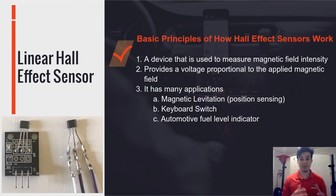Some of the basic principles of how a hall effect sensor works is that these type of sensors are used to measure magnetic field intensity, and the output of this device is the voltage that is proportional to the applied magnetic field. Today we're going to be looking at an application of this type of sensor with magnetic levitation.